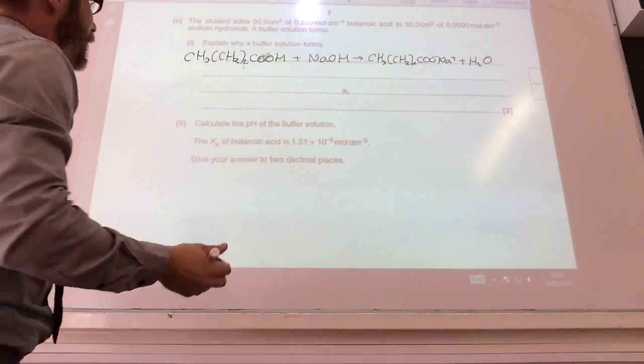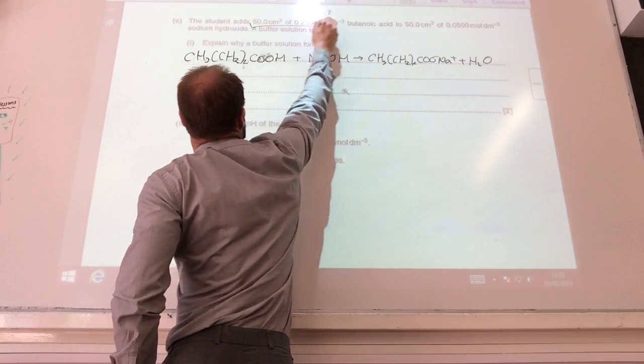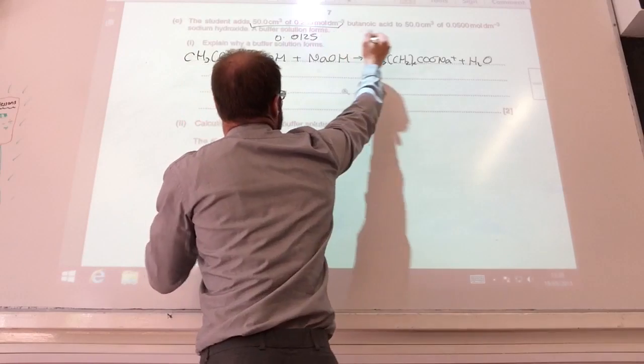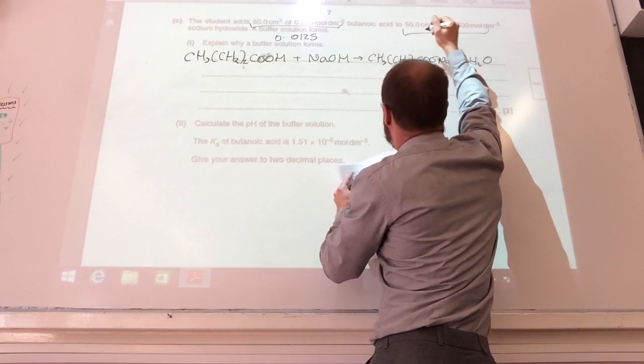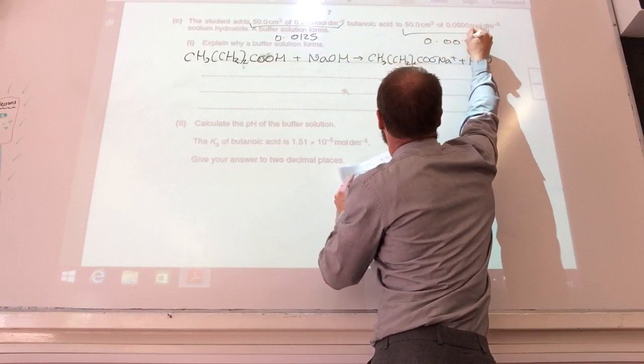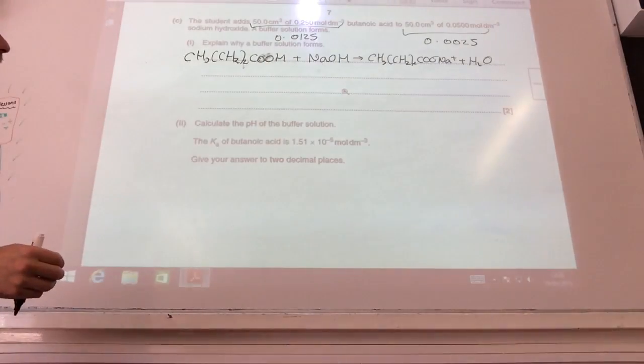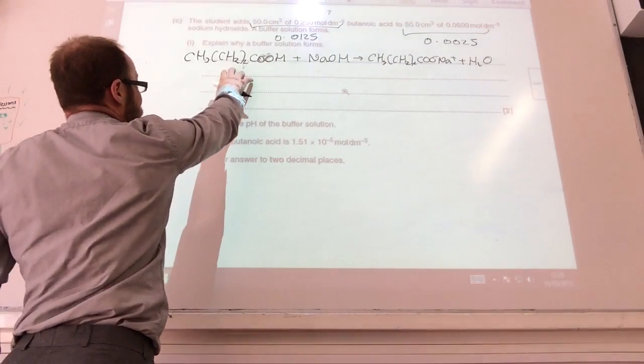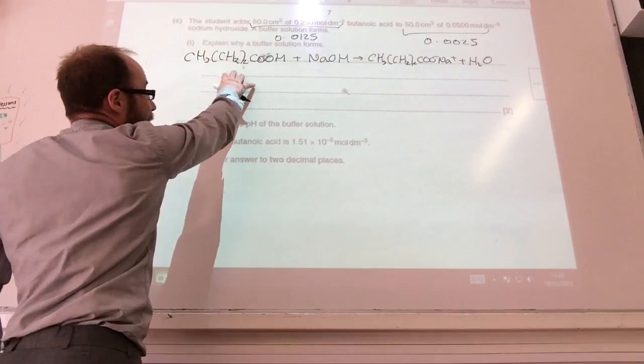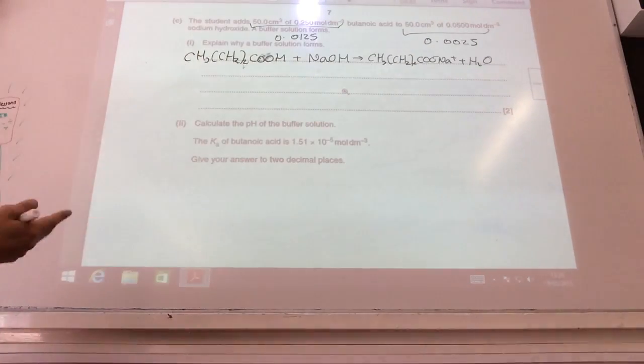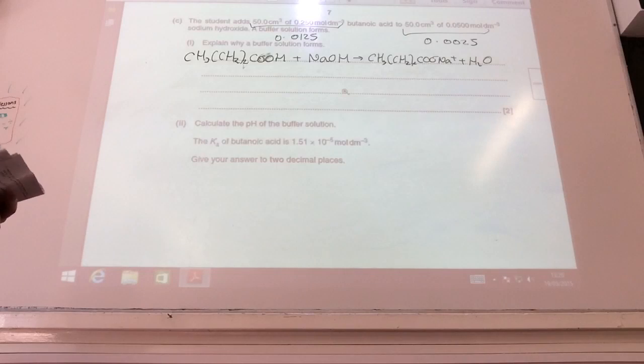Why does a buffer solution form? Well, if you work out the moles of that, you've actually got 0.0125 moles of that. And moles of that, you've actually got 0.0025 moles of that. So you've got butanoic acid in excess. So you've still got some of this butanoic acid remaining, as well as the sodium butanoate that you've formed. Therefore, you've got a weak acid and the salt of a weak acid, which means that you have a buffer solution.